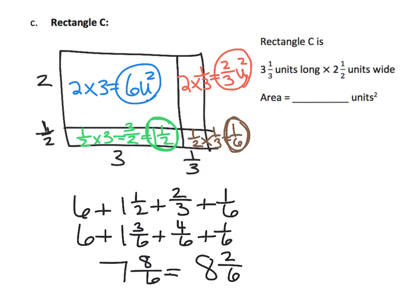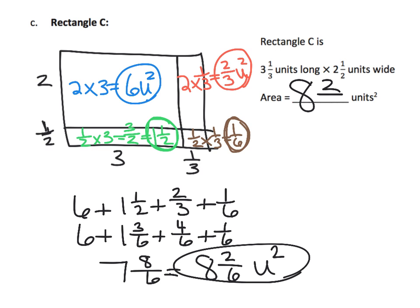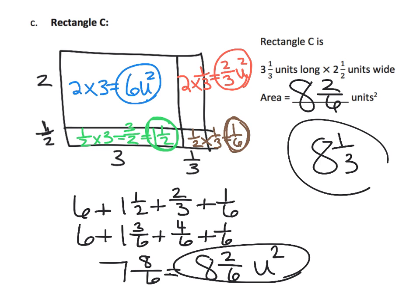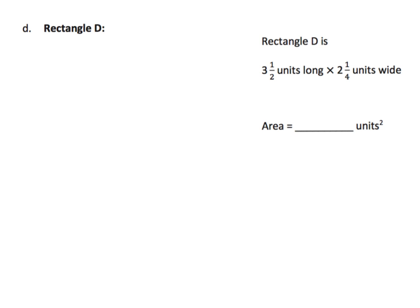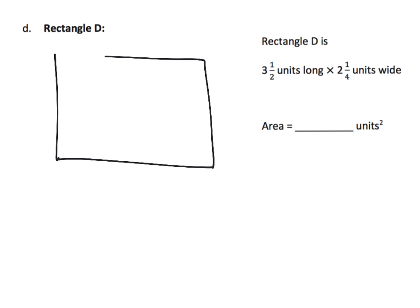That gives seven and eight-sixths, which equals eight and two-sixths square units — students might also write this as eight and one-third square units.